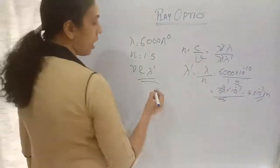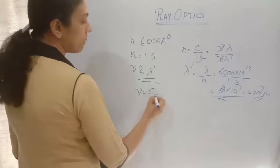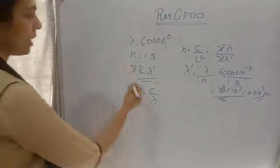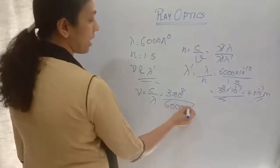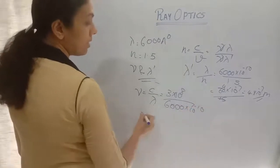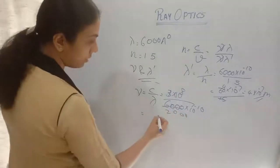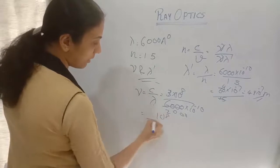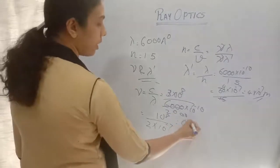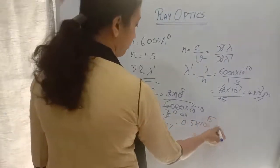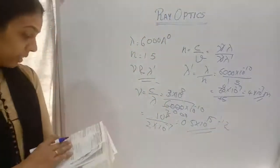Now we find frequency. V = νλ, so ν = C/λ. C = 3 × 10⁸ m/s, λ = 6000 angstrom = 6 × 10⁻⁷ m. Calculating: 3 × 10⁸ divided by 6 × 10⁻⁷ gives 0.5 × 10¹⁵, which is 5 × 10¹⁴ Hz. So the frequency is 5 × 10¹⁴ Hz and wavelength in the medium is 4 × 10⁻⁷ m.